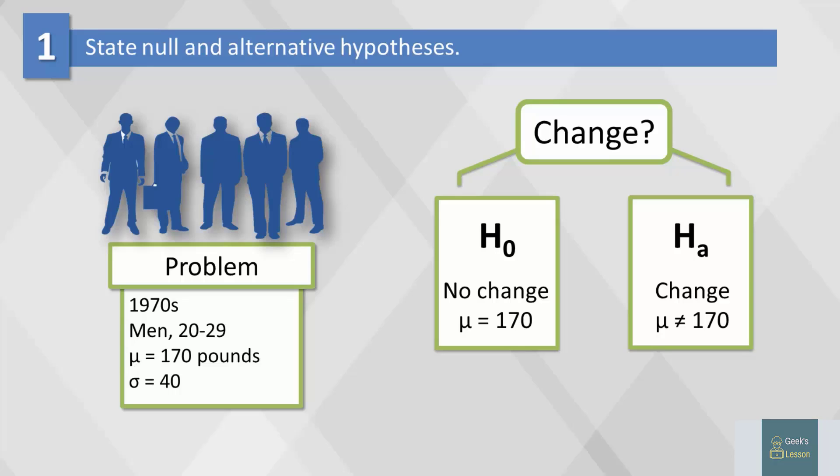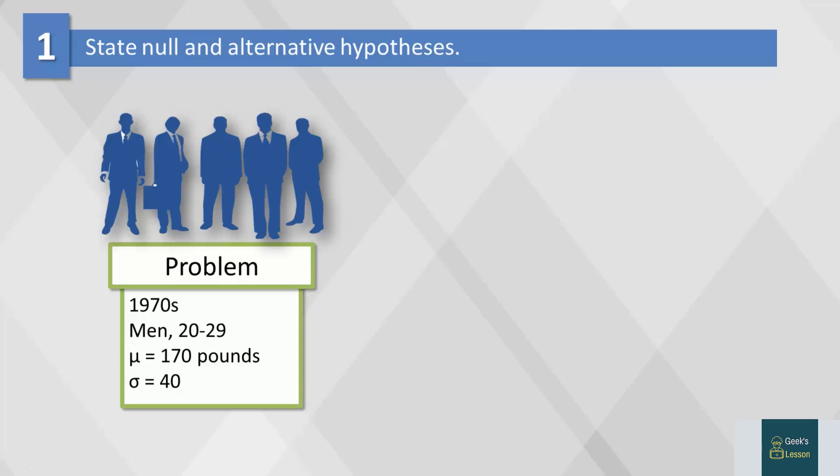This is called a two-sided test, the most common form of hypothesis testing. We can also do a one-sided test in which we ask if weight has increased over time, so the alternative hypothesis would be mu is greater than 170 pounds.